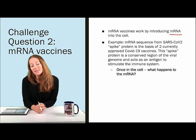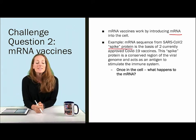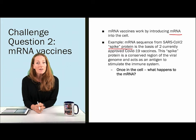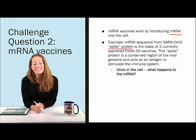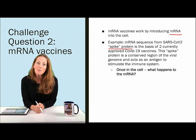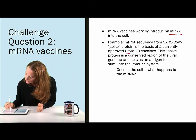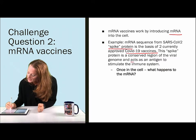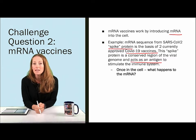The current mRNA vaccines for SARS-CoV-2 encode the spike protein. The spike protein is a portion of the SARS-CoV-2 RNA genome — these are RNA viruses — and it's just one piece. Alone, the spike protein cannot cause disease; it's just a piece of the RNA genome of the virus. The spike protein is the basis of these COVID-19 vaccines. It is a conserved region and acts as an antigen — in other words, something that can stimulate the immune system.